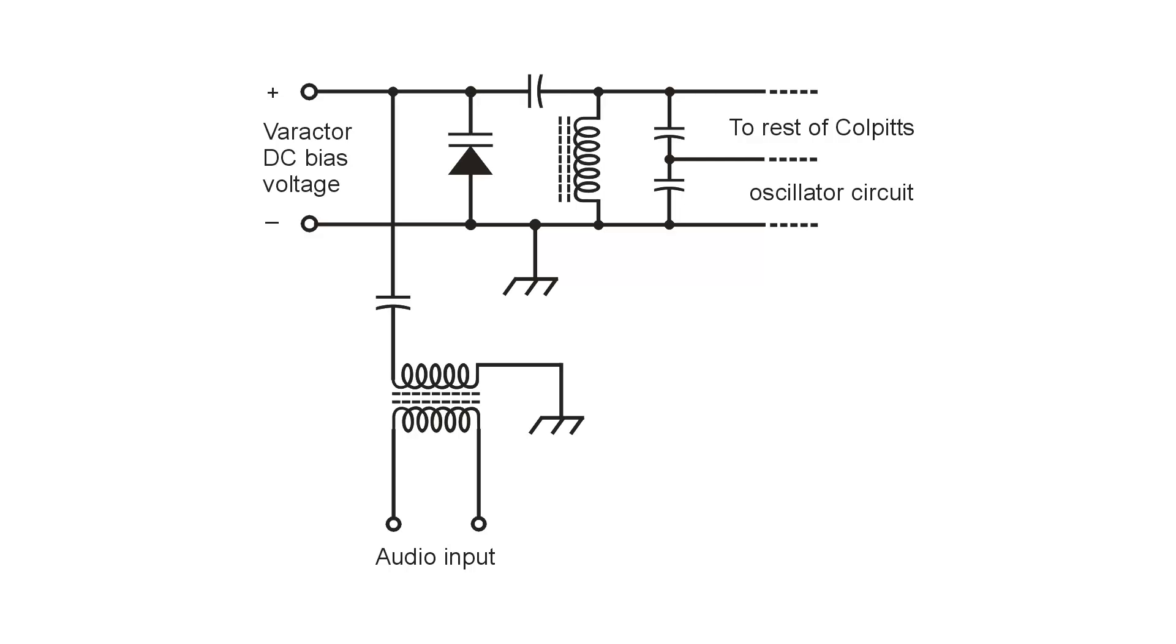A basic frequency modulator circuit can be found in figure 27-7. That's this figure right here on page 465 of Teach Yourself Electricity and Electronics, 6th edition.